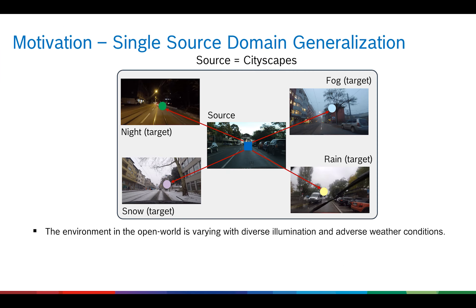In an open world, the environment is varying and has diverse illumination and adverse weather conditions. This makes the deployment of deep learning models challenging. Therefore, improving the generalization capability of neural networks is crucial for safety-critical applications such as autonomous driving.